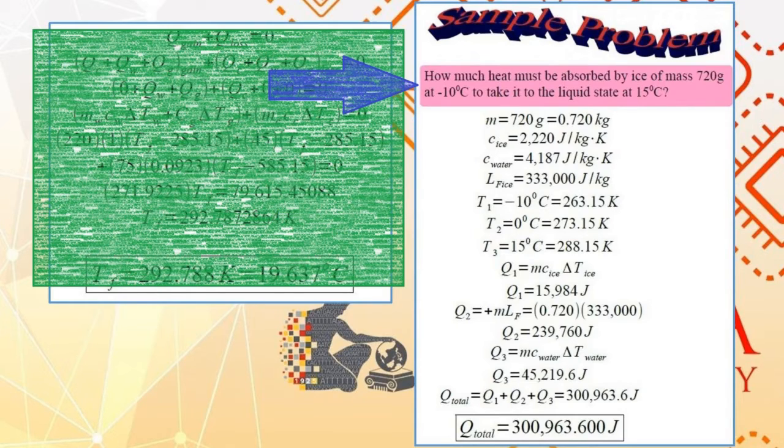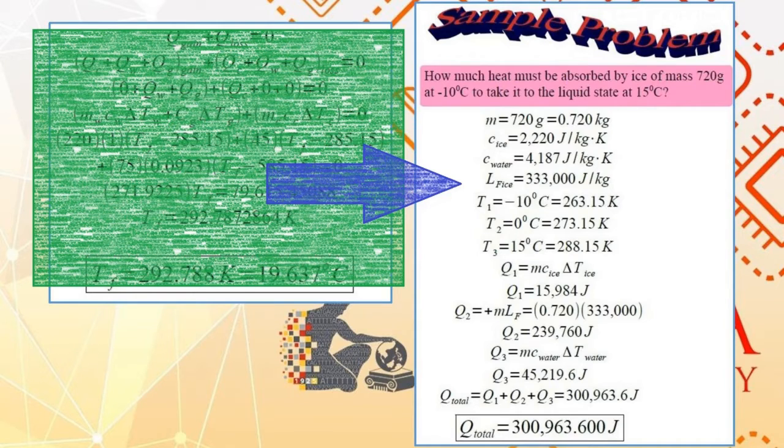Here you have water that is initially solid and you are to add heat to it to melt it into liquid water at a final temperature of 15 degrees Celsius. We have the following values. There's only one object, H2O, initially solid ice.